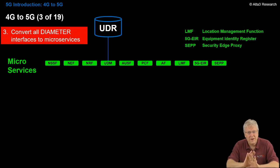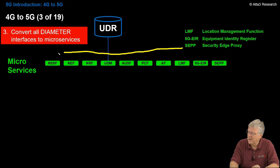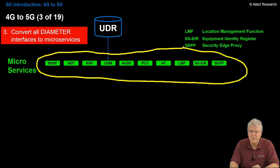So we're going to get rid of diameter. No diameter in 5G. We're going to replace all of those diameter interfaces with microservices. So here they are lining them all up for you. These are the microservices that replace those diameter interfaces.